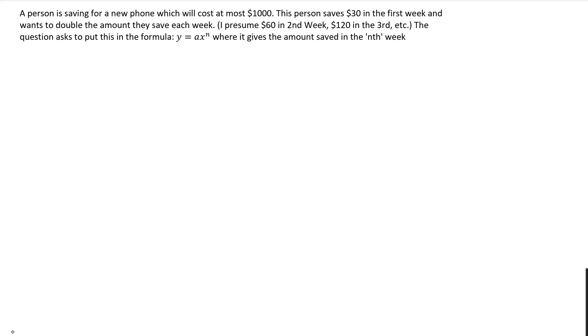This person saves $30 in the first week and wants to double the amount they save each week. So what I'm gonna do is create a little table here and I'm gonna call it n as the number of weeks and then s for money saved. This could be the same thing as saying x and y.